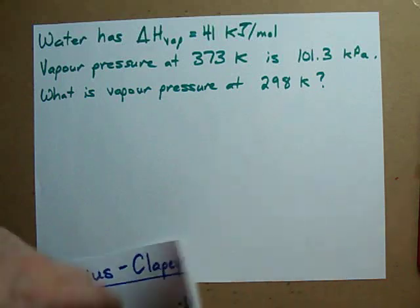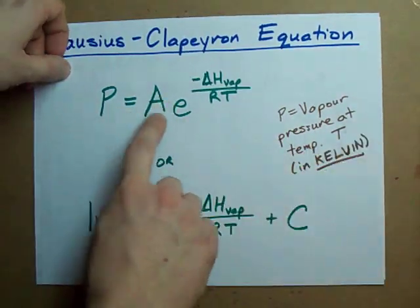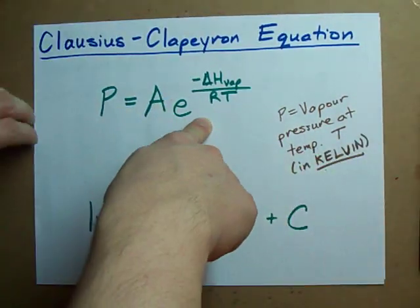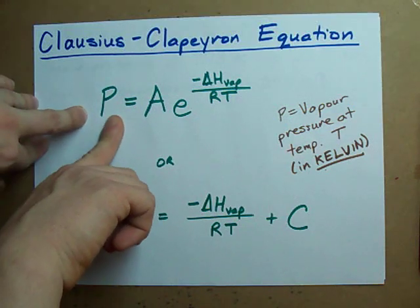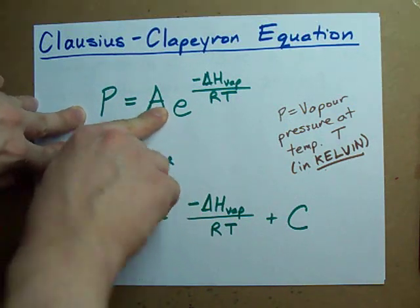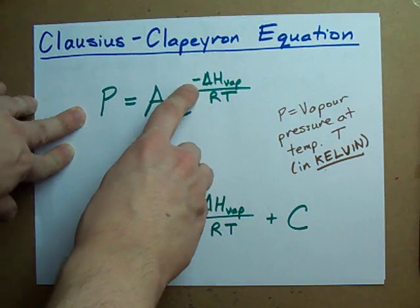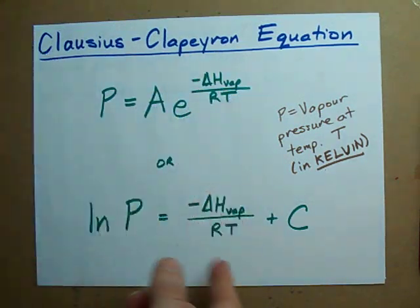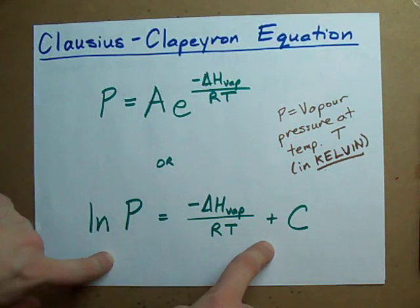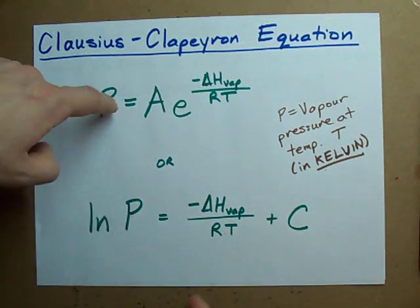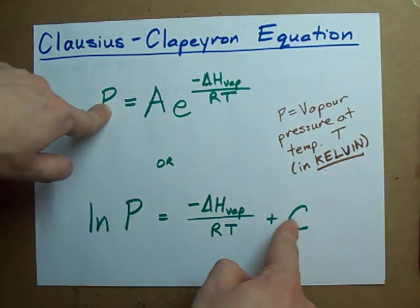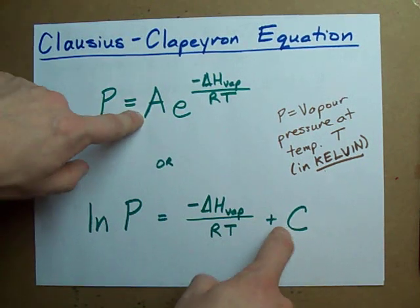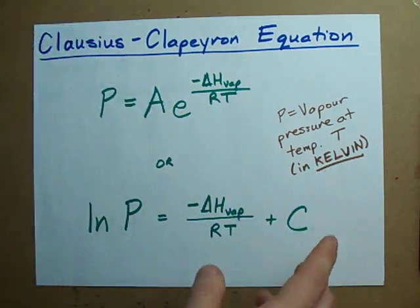I don't know if I'm pronouncing that right. But do you recognize this formula? The vapor pressure of a substance is some constant times E to the power of negative enthalpy of vaporization over RT. Your teacher may have given it to you in this form, which is the exact same thing, just rearranged. And there's some other constant here, C. We don't call it A because these two numbers aren't exactly the same.